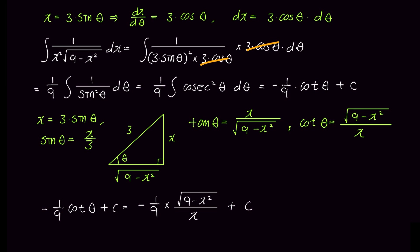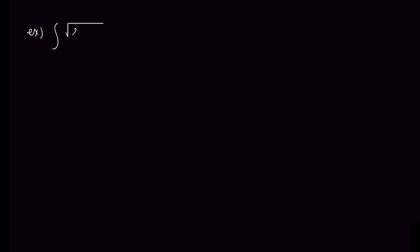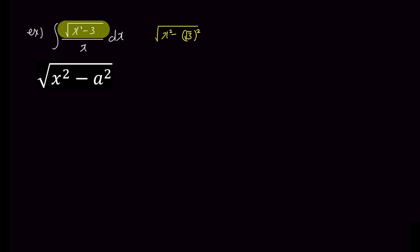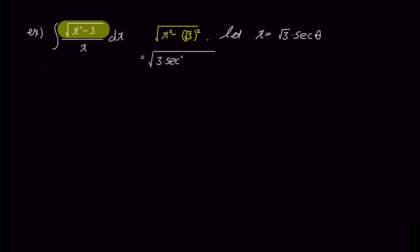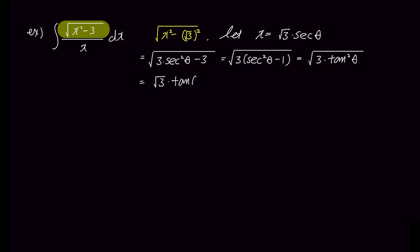Just like we did here, don't forget to convert the value back to x in the final result. The second example is the integral of square root of x squared minus 3 over x. Since 3 inside the square root can be expressed as the square of square root 3, let's substitute x with square root 3 times secant theta. The numerator becomes square root of 3 secant squared theta minus 3. After factoring, the expression inside the square root becomes 3 times secant squared theta minus 1, which simplifies to square root 3 times tangent theta.